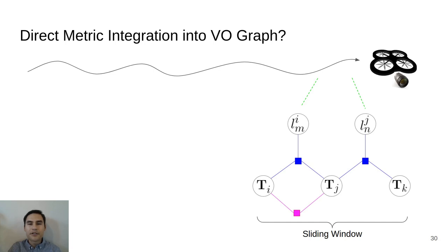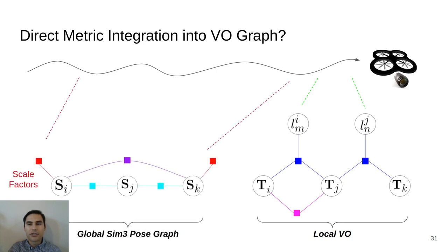Instead, in addition to a local visual odometry module to estimate the relative geometry over a sliding window of keyframes, we introduce a separate global SIM-3 pose graph to fuse the unscaled relative geometry with metric depths from our network in the form of unary scale factors. The global pose graph is constructed from keyframes marginalized out of the local VO graph and is able to fuse scale information over the entire trajectory, including loop closures, in order to more robustly lock on to the true metric scale.